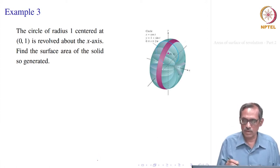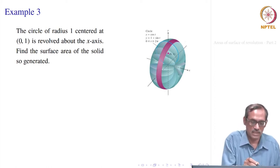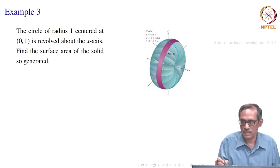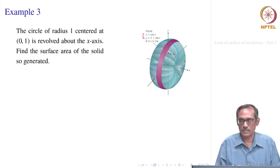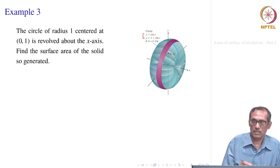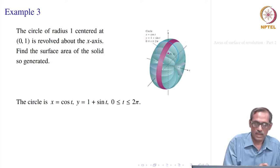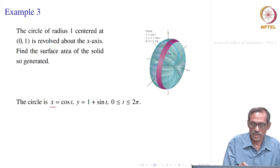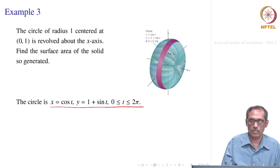Since it is a circle, it will be easier to parameterize with x = cos(t) and center at (0, 1). So it is x = cos(t) and y = 1 + sin(t), where t varies from 0 to 2π. That is how we get the parameterization of the circle.